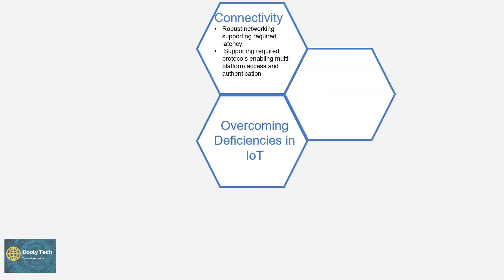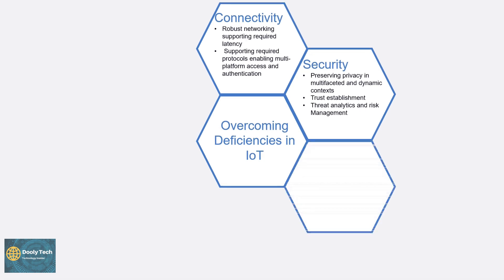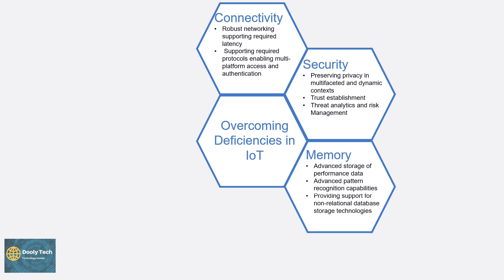The next capability is security, which means preserving privacy in multifaceted and dynamic contexts, trust establishment, and most importantly, threat analytics and risk management. Next comes memory — advanced storage of performance data, which includes latency, memory utilization, and related metrics. Then comes advanced pattern recognition capabilities, which is one of the most important capabilities required in today's IoT, along with providing support for non-relational database storage technologies.